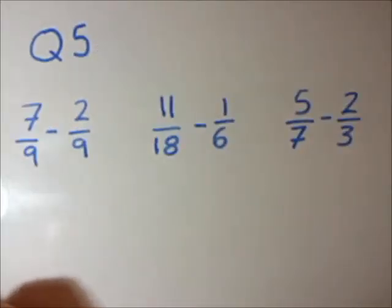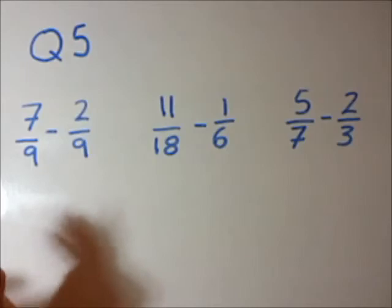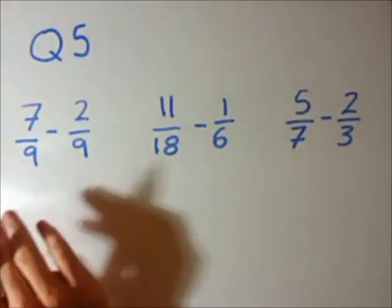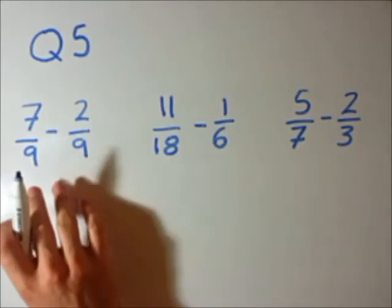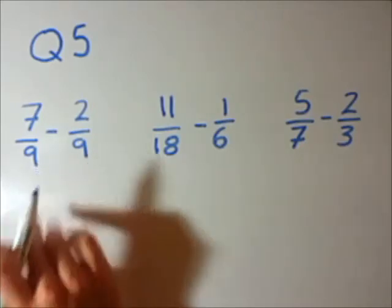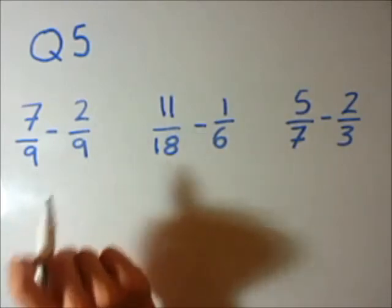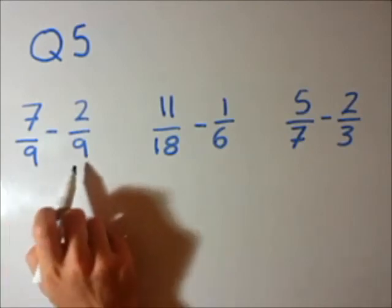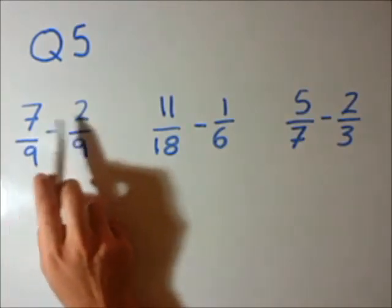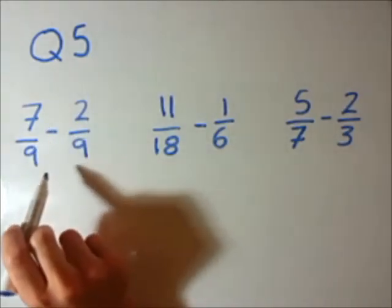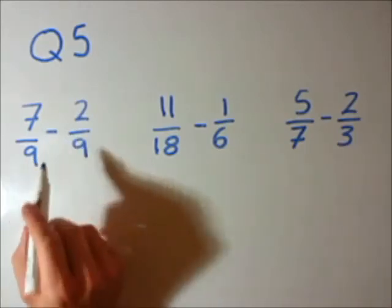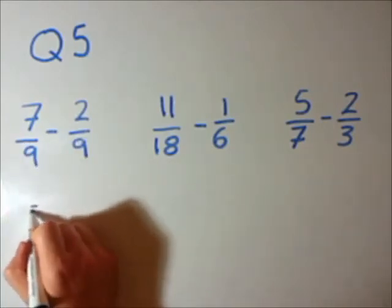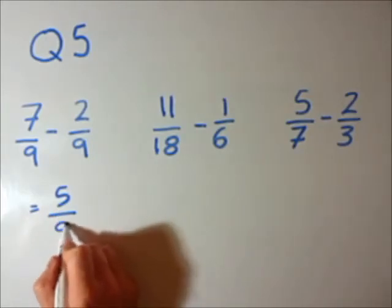Question 5 — now we're subtracting fractions. Question 4 was adding fractions, and it's the same golden rule: the denominator, when adding or subtracting fractions, has to be the same. If the denominator is the same and we have a subtract sign, we subtract the top — we don't add like in question 4. First example: our denominators are the same, so we can just subtract the top. 7 minus 2 is 5. We leave the denominator the same. There's our answer.